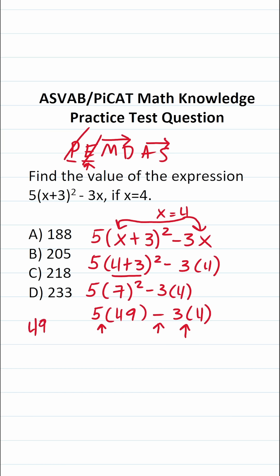So in other words I'm going to do 49 times 5. Now 9 times 5 is 45 so bring down a 5 carry a 4. 4 times 5 is 20 plus 4 is 24. This becomes 245 minus 3 times 4.